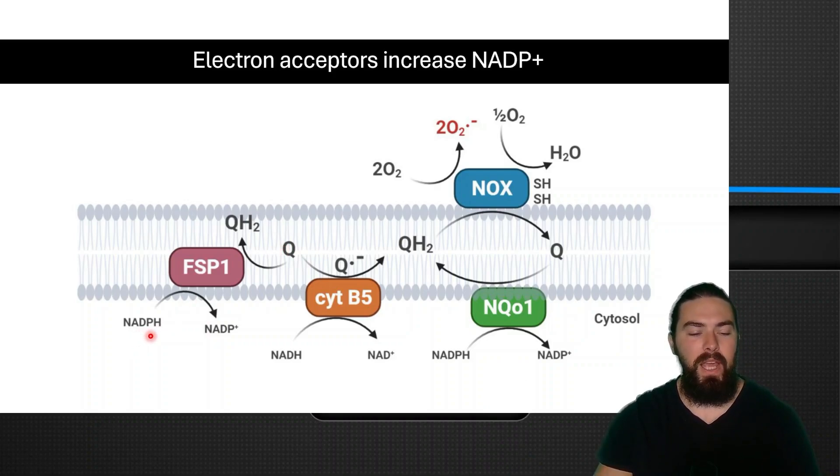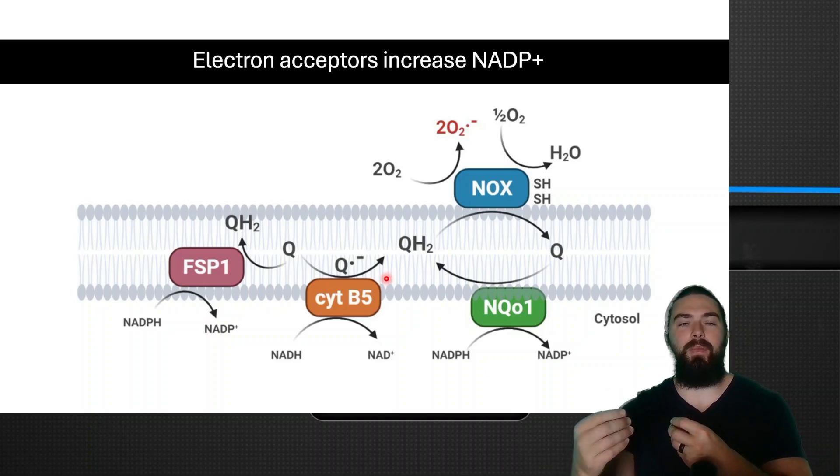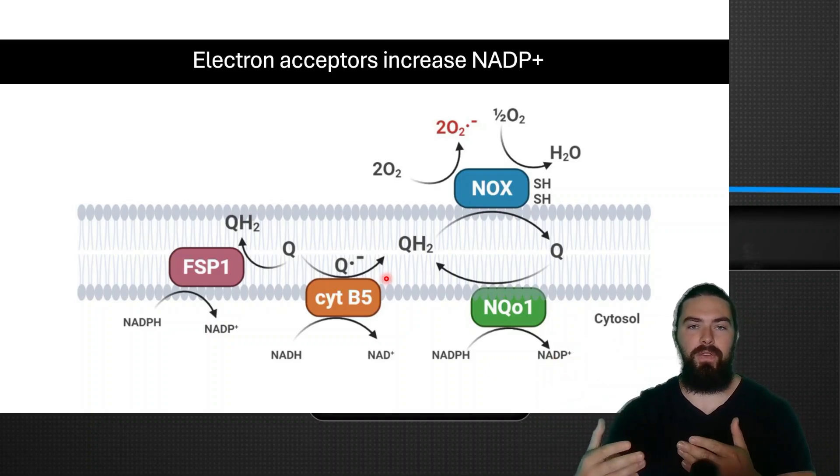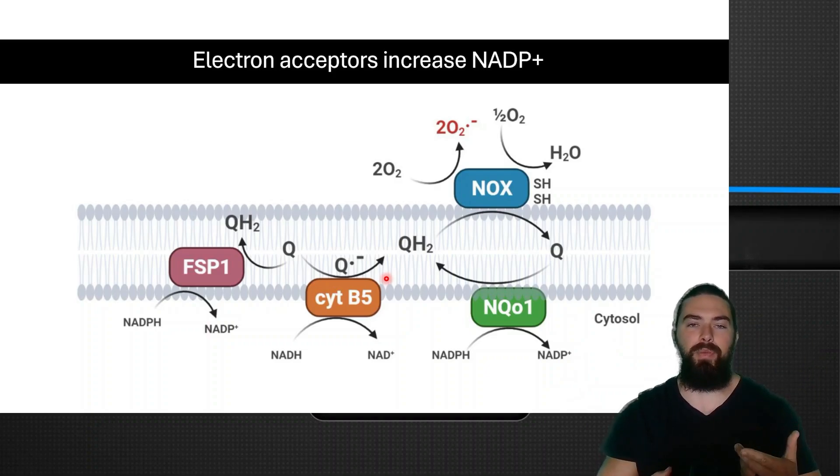Now you can see here that NADPH is converted into NADP by donating its electrons onto coenzyme Q10. The same thing with NADH. It's converted back into NAD by donating its electrons to coenzyme Q10, which allows you to have more NAD because NAD is needed for the production of energy to use in glycolysis and the Krebs cycle.